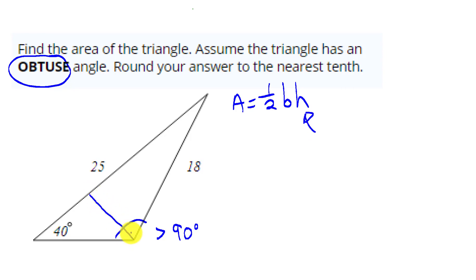So let's drop a line down here from that vertex, and there would be a height. The area of this triangle would be one-half the base, which is 25, times the height. But how are we going to find that height?